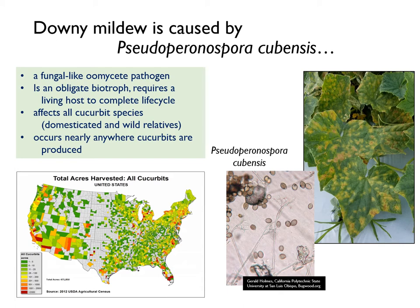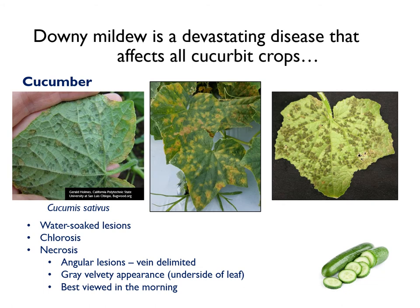Since cucurbits are produced throughout the United States, downy mildew represents a considerable disease challenge for growers every season. On cucumber, downy mildew symptoms from the top of the leaf start as angular water-soaked lesions that turn yellow or chlorotic and become brown or necrotic over time. Severe infections can lead to rapid blighting and leaf death. From the underside of the leaf, these lesions will have a gray velvety appearance when P. cubensis is actively sporulating.